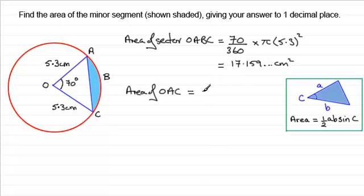For two sides and an included angle, area equals 1/2 ab sin C. Using that formula, the area of triangle OAC equals 1/2 × 5.3² × sin 70°.